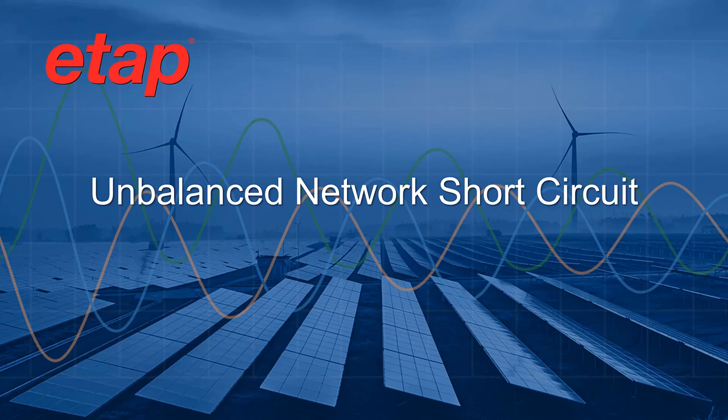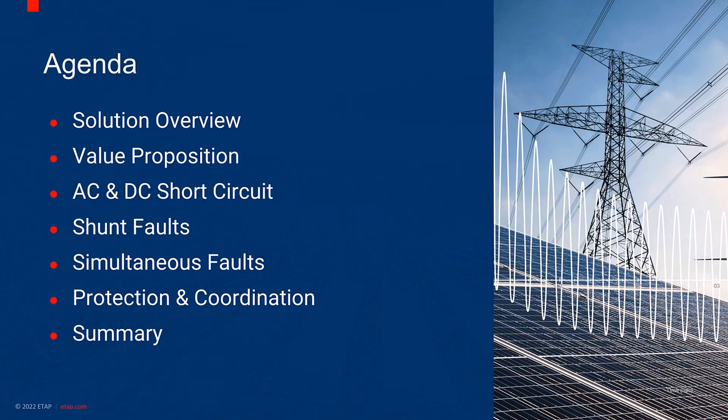The new Unbalanced Network Short Circuit module applies phase domain modeling to represent each individual phase as described by the user, and fully captures system unbalanced features caused by any system component. We will cover a solution overview, all available features, and the overall value proposition. Then I will go into the software and look at examples running AC and DC short-circuit calculations, including shunt faults, simultaneous faults, and how this becomes the foundation for protection and coordination on complex systems.